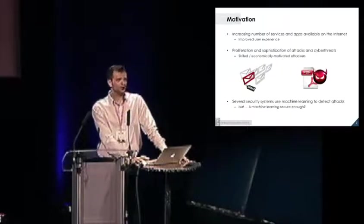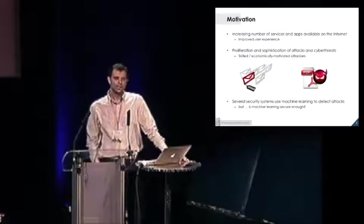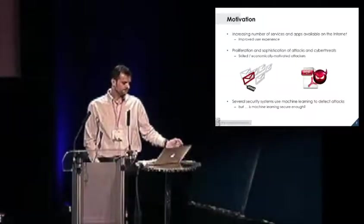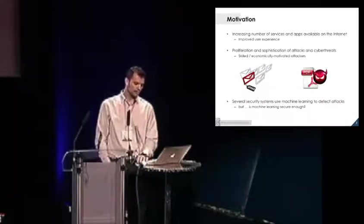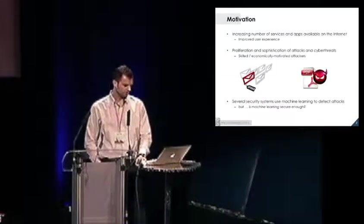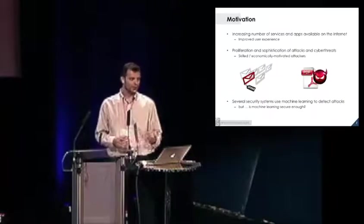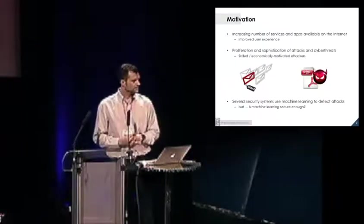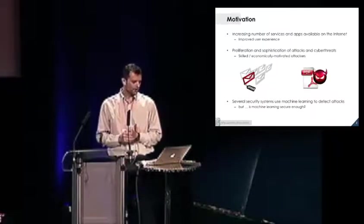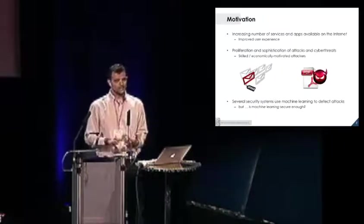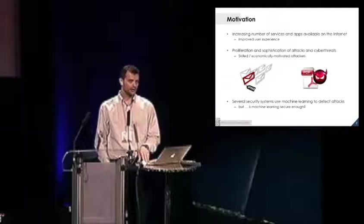On the other hand, the good news is that we have also been increasing sophistication of defense mechanisms. Several security systems rely on machine learning to detect threats and attacks over the Internet. This is a sort of arms race going on between attackers and defenders. It's likely to happen in the near future, and to some extent it's already happening, that we may have attacks targeting the machine learning component of the system. As an attacker, you may exploit specific vulnerabilities of the learning algorithms to infect the system and compromise system security.